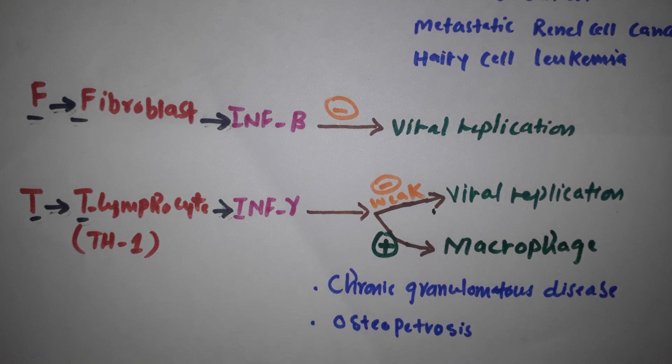What are the main functions of interferon gamma? It activates macrophages. So it can be used in chronic granulomatous disease and osteopetrosis. Just remember LFT.